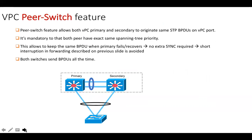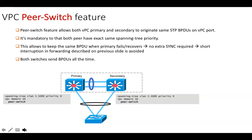To avoid this extra synchronization process, Cisco introduced a feature called peer switch. Peer switch allows both VPC primary and secondary to originate the same BPDUs. In this way, we will not encounter extra synchronization and there will be no disruption in traffic forwarding. We must ensure that the STP priority is the same on both primary and secondary — if the priority is not the same, peer switch will not be operational even if configured.